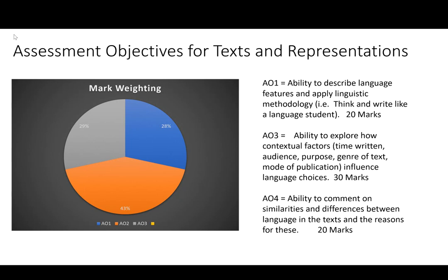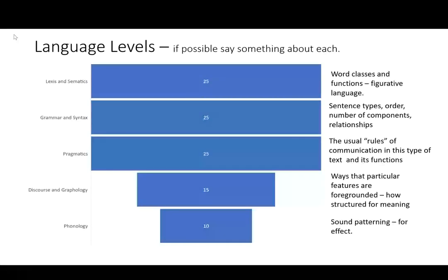Okay, so there are six language levels that provide a framework for the textual analysis. To some extent these could also be used to explore child language, language diversity, and language change. As you can see, the greatest proportion of the content of your answer should be the lexical semantic, grammatical syntactical, and pragmatic features.